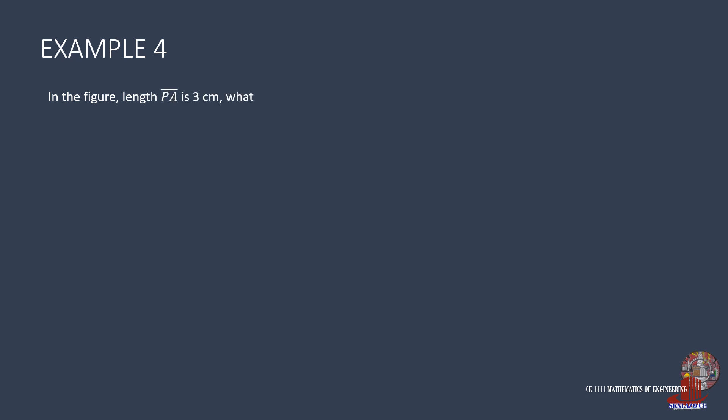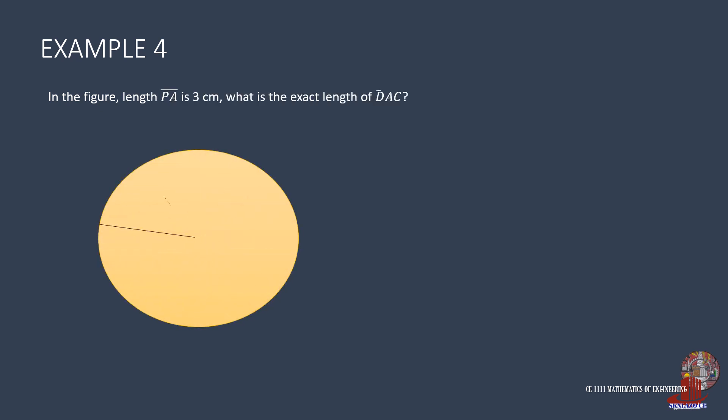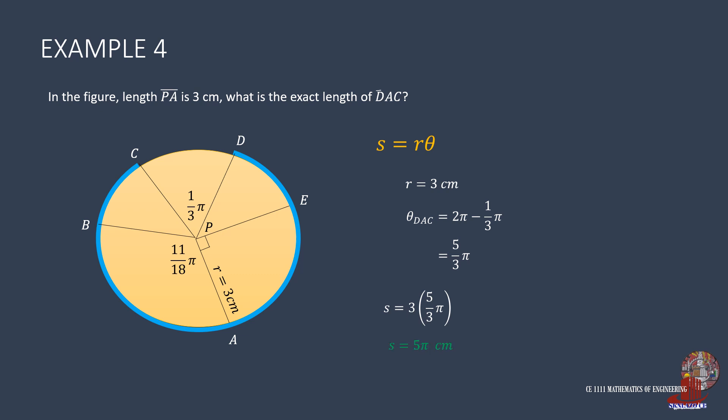The fourth example has a figure shown where line segment PA is the radius measuring 3 centimeters. We are to determine the exact length of arc DAC, which is again a major arc. So from the equation s equals r theta, r is 3 centimeters and theta is 2π minus the disregarded arc of π over 3, which results in 5/3 π. Place these parameters in the equation and get s as 3 times 5/3 π, simplified as 5π centimeters.